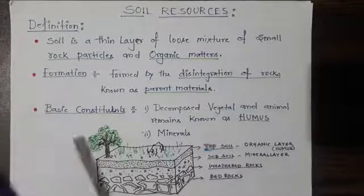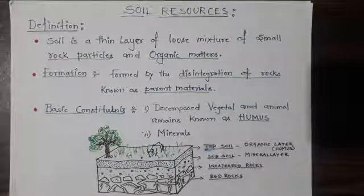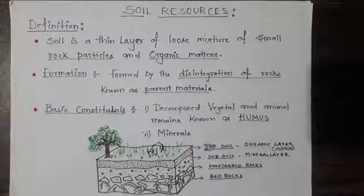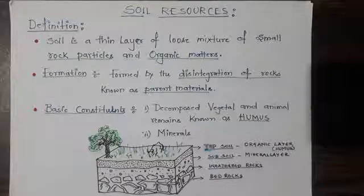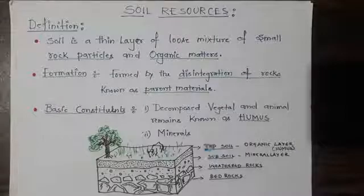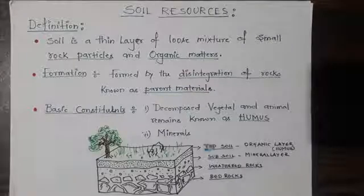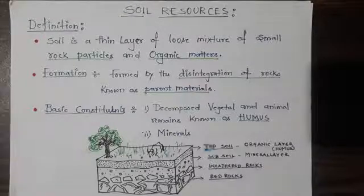Let me define what is soil. Soil is a thin layer of loose mixture of small rock particles and organic matter. Soil is formed by the disintegration of rocks known as parent material. Rock is called the parent material because rocks are the aggregate of minerals. Once rock gets disintegrated or weathered, the eroded particles get deposited into the soil and these particles are rich in mineral nutrients, adding to the mineral composition of the soil.